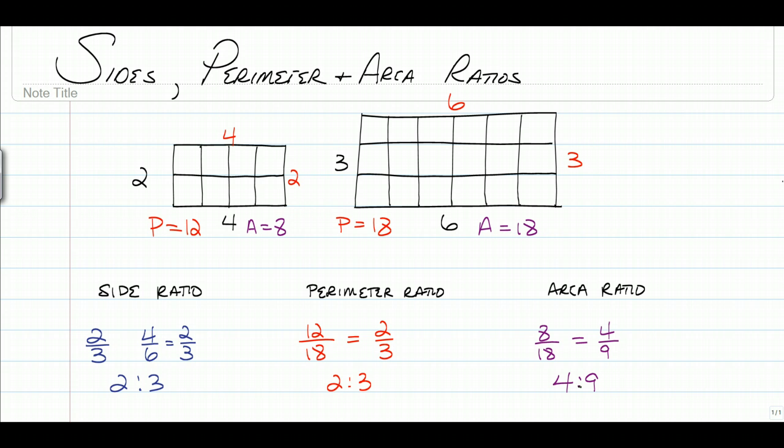So if you sit there and look at that for a minute, you can see the relationship between the side ratio and perimeter ratio has got to be the same. But the ratio of sides to area is the side ratio squared.